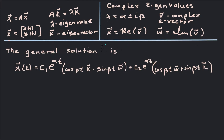So the general solution — if lambda is alpha plus or minus i·beta, K is the real part of the complex eigenvector, and W is the purely imaginary part — then the general solution, the vector x of t, is going to be: c1·e^(αt)·[cos(βt)·K − sin(βt)·W] plus c2·e^(αt)·[cos(βt)·W + sin(βt)·K]. That's the general solution when we have complex eigenvalues.